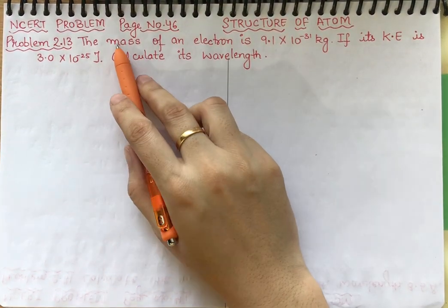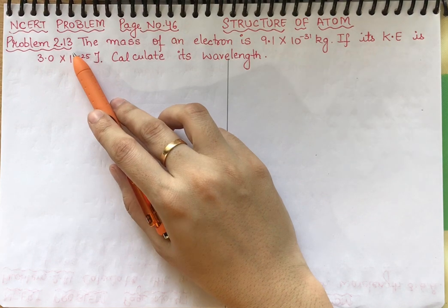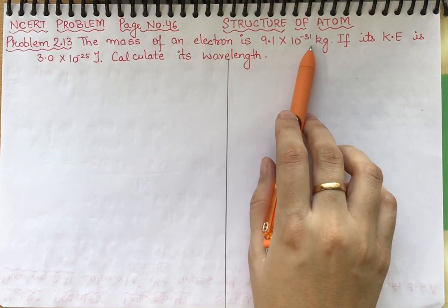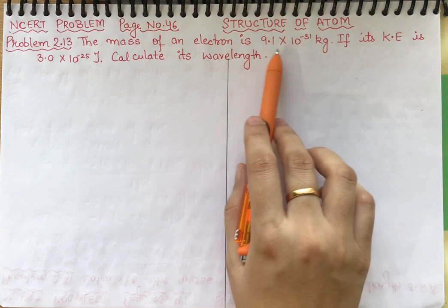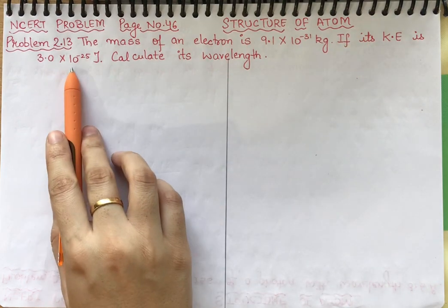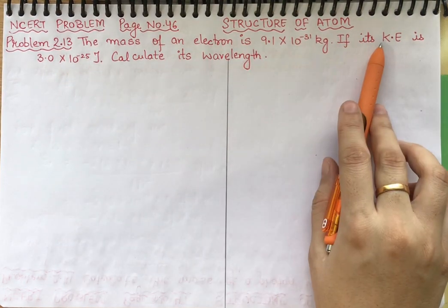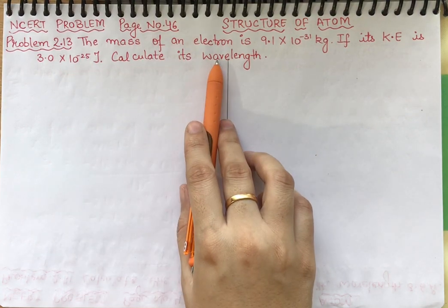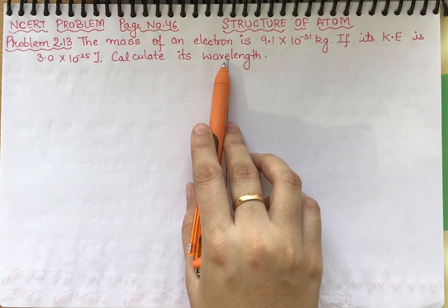Students, here we have NCERT problem page number 46, problem number 2.39. We are given the mass of an electron as 9.1 × 10⁻³¹ kg, and its kinetic energy is 3.0 × 10⁻²⁵ joule. We need to calculate its wavelength.